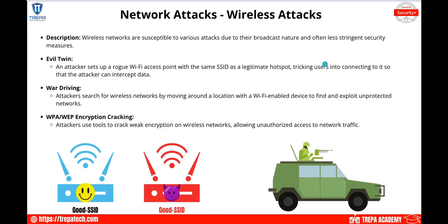Next are wireless attacks. Wireless networks are susceptible to various attacks due to their broadcast nature and often less stringent security measures — especially in small businesses or shopping malls that just deploy an access point from the ISP and forget about it. An evil twin attack is where an attacker sets up a rogue Wi-Fi access point with the same SSID and spoofed information as the legitimate access point. Users connect to the evil twin instead, which can intercept traffic, perform packet inspection, and steal information — all while still directing traffic to the internet so the user may not notice.